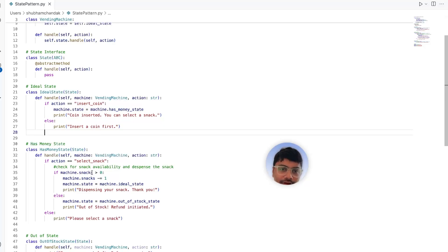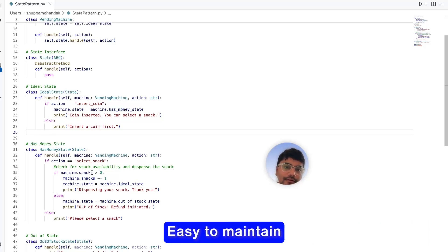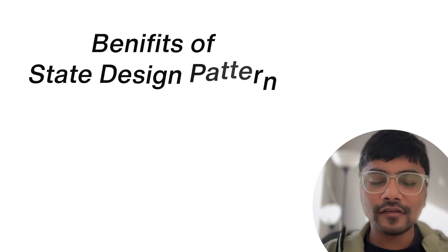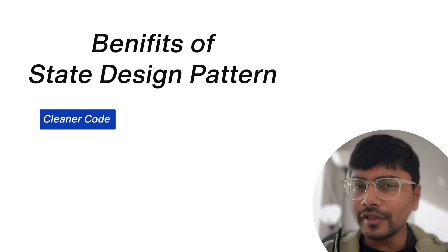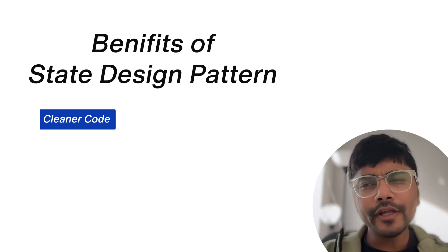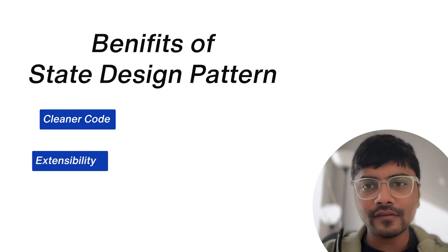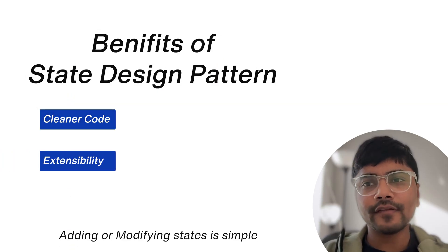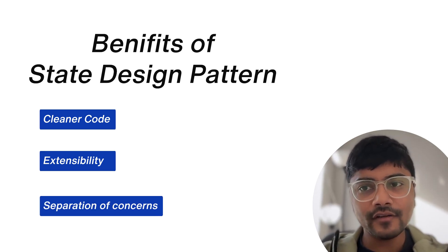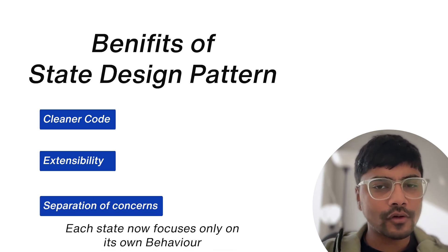With the state design pattern, our code is easy to maintain and adding a new state or modifying existing behavior is straightforward. The benefits are: first, cleaner code — each state's behavior is encapsulated, avoiding huge if-else or switch statements. Second, extensibility — adding or modifying states is simple and doesn't affect existing code. Third, separation of concern — each state focuses only on its own behavior.